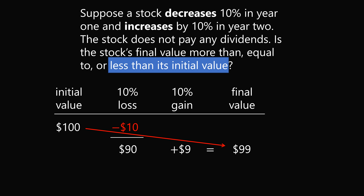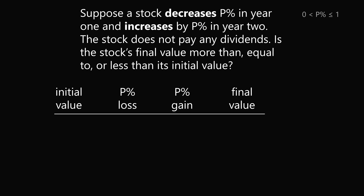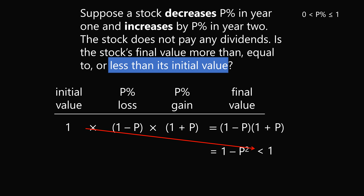In fact, the same logic holds in general. Let's replace 10% with p%, and represent p% as a decimal between 0 and 1. If you start with an initial value of 1, a p% loss is the same as multiplying by (1 - p). Then a p% gain multiplies by (1 + p), giving a final value of (1 - p)(1 + p), which equals 1 - p². That is less than 1, so you end up with less than the initial value.